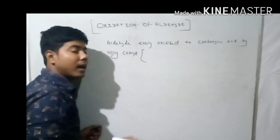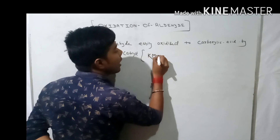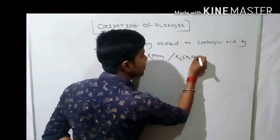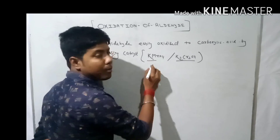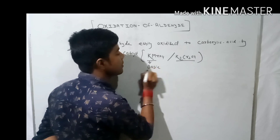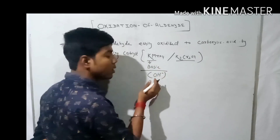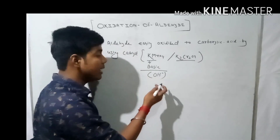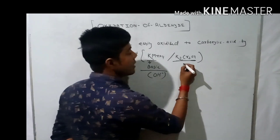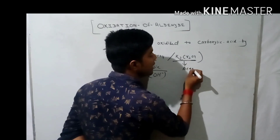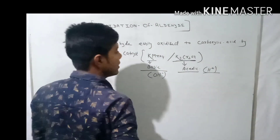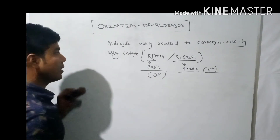Here you can take a catalyst KMnO4 or K2Cr2O7, but two things are important. The medium of KMnO4 is basic — that means you can write OH⁻ here, because OH⁻ represents a base. And the medium of K2Cr2O7 is acidic — that means you can write H⁺ here, because H⁺ indicates an acid.